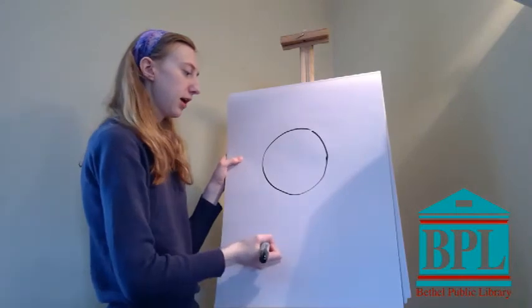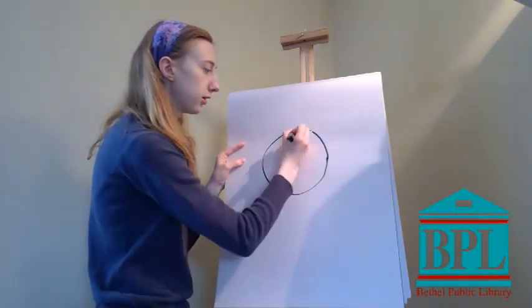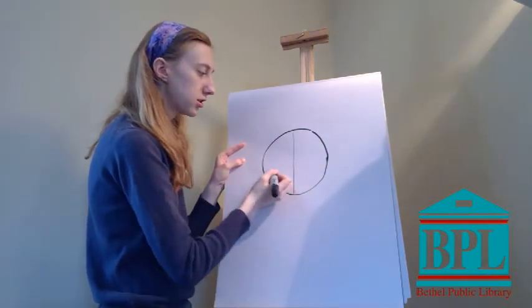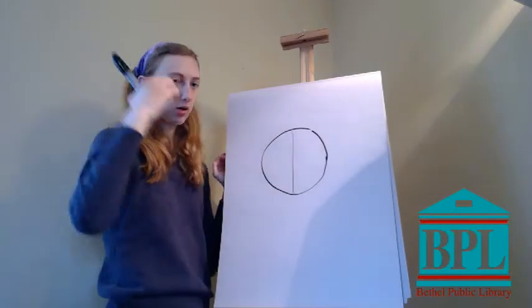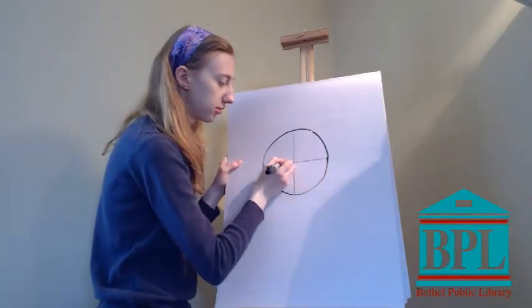There you go. And when you always draw people you're always going to want to make sure you make a line where the middle of the head is and also where the eyes are going to go. The eyes are usually around the middle of the head. So there we go.